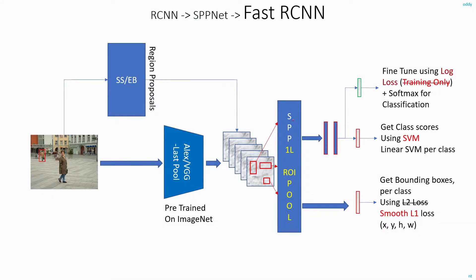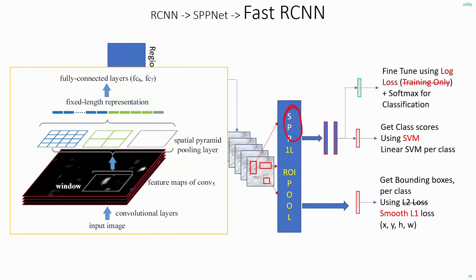The first change they did was in the Spatial Pyramid Pooling layer. In SPPNet they did 3 or 4 levels of pooling: level 0, level 1, level 2, and practically even level 3 pooling. In Fast RCNN they got rid of all these levels of pooling. Instead they used a single level of 7x7 grid.